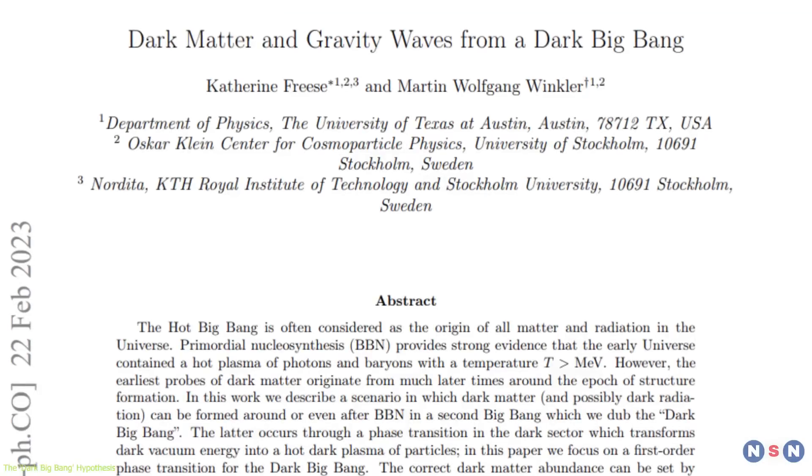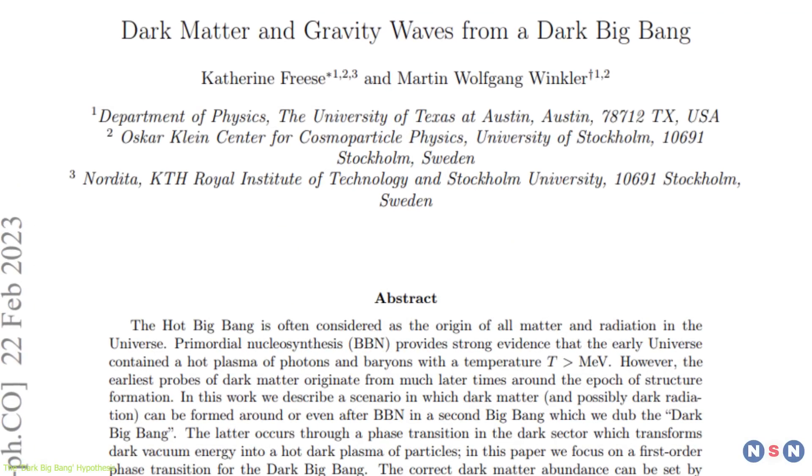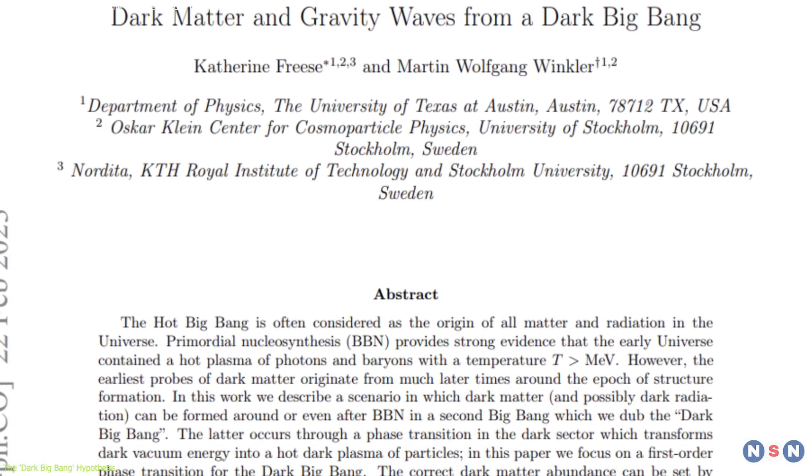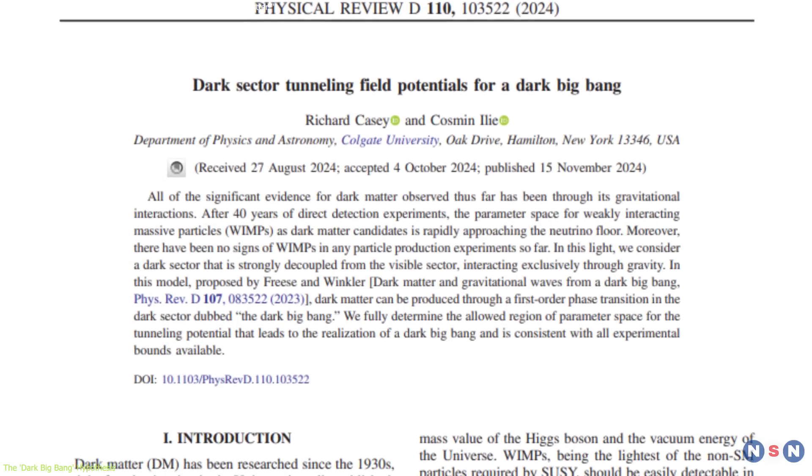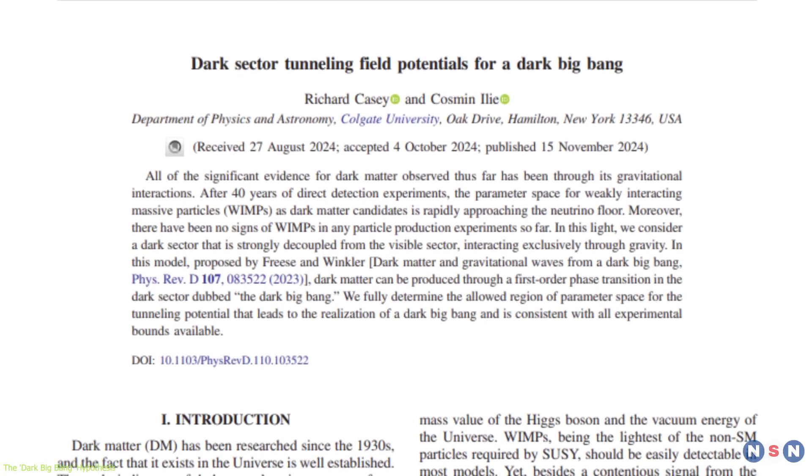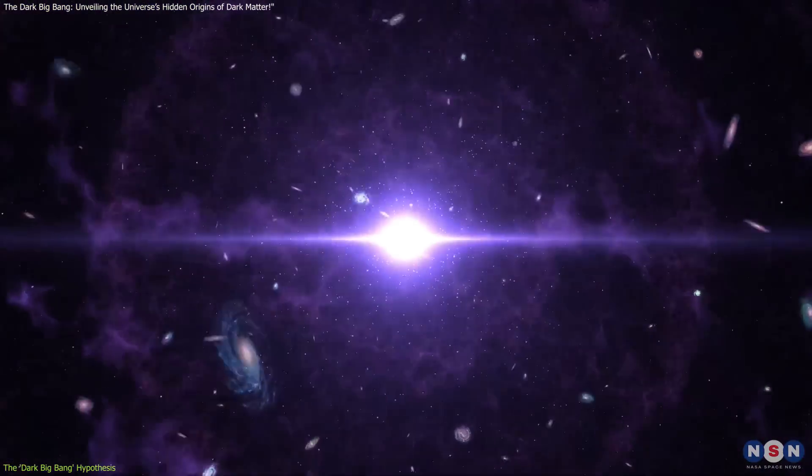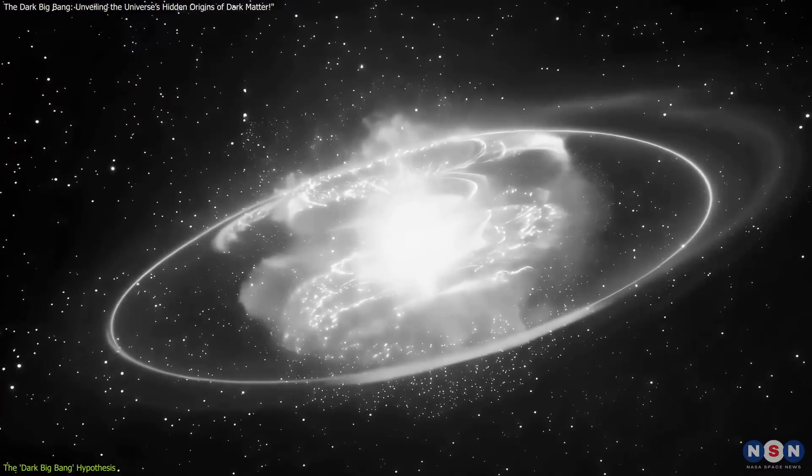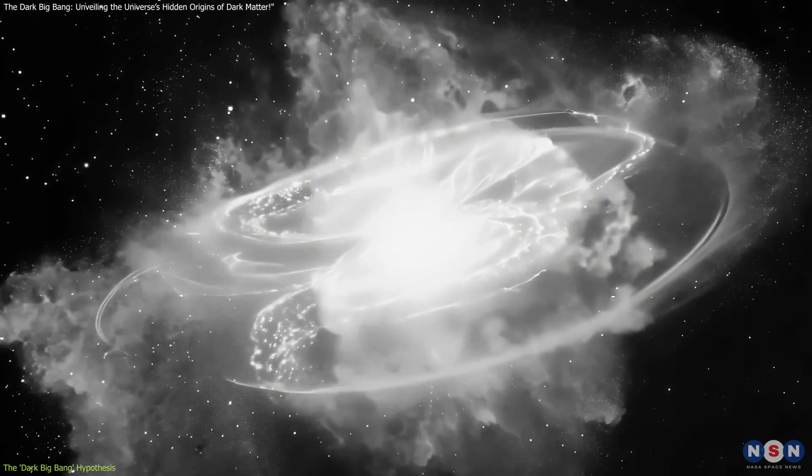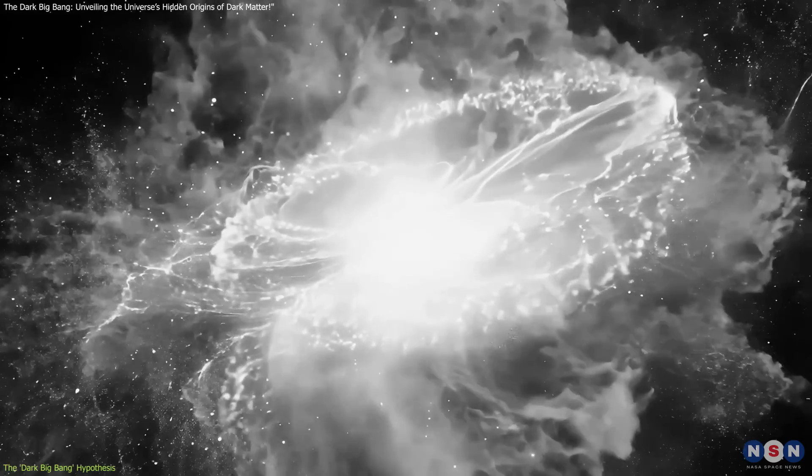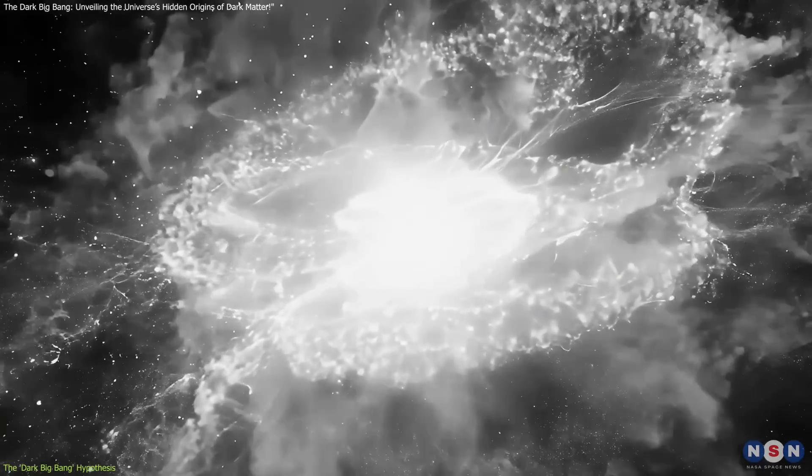The Dark Big Bang hypothesis, proposed by Katherine Fries and Martin Winkler in 2023 and expanded by Cosmon Ely and Richard Casey, challenges this traditional view. Instead of forming during the Big Bang, dark matter could have emerged slightly later in a distinct event, a Dark Big Bang, happening within the first month of the universe's existence.